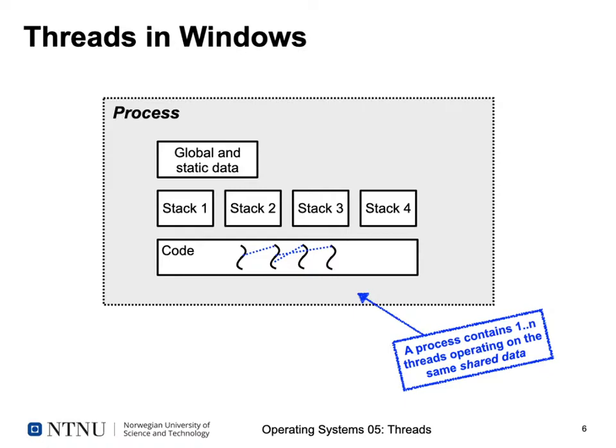Let's look at how threads are used in common operating systems, starting with Windows. When we talk about Windows we always mean the Windows NT-derived versions — Windows NT, 2000, 7, 8, 10 — not the older Windows 95 or 98, which were just pseudo-multitasking systems based on MS-DOS. A process in Windows has global and static data shared among everything in the process, plus a separate stack for each thread.